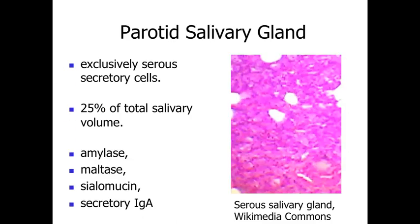Within the parotid salivary gland, we're looking at a structure involved with about 25% of the total salivary volume, and the parotid salivary gland is exclusively serous-secreting cells — exclusively cells with basal basophilia. The nucleus sits towards the bottom portion of the cell, lots of rough endoplasmic reticulum in the middle third, and then secretory granules towards the apex of the cell. Those secretory granules carry things like amylase and sialomucin, which are secreted within this area.